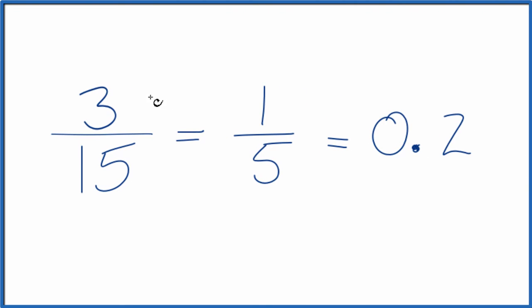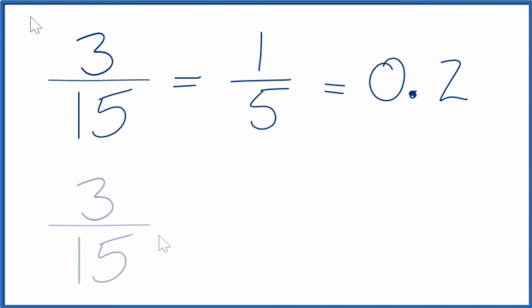Let's write another equivalent fraction for 3 fifteenths. So instead of dividing like we did up here, we could multiply. We could just multiply by 1, but that would give us 3 fifteenths again. Let's multiply by 2 over 2. That way, 2 over 2, 2 divided by 2 is just 1. We're multiplying by 1. We don't change the value, just the way it's represented. 3 times 2 is 6. 15 times 2 is 30. And 6 over 30, that's another equivalent fraction for 3 fifteenths.